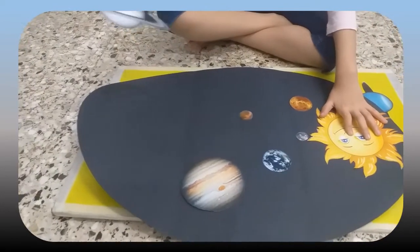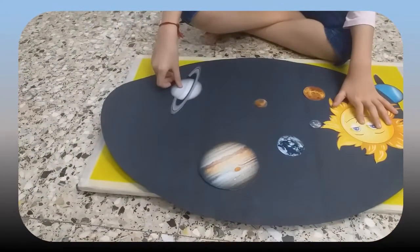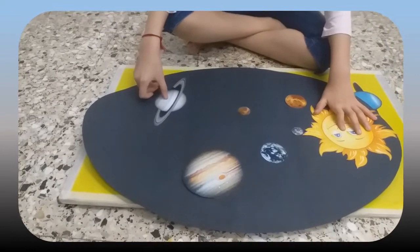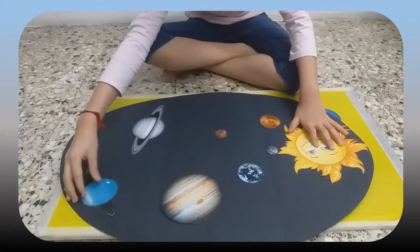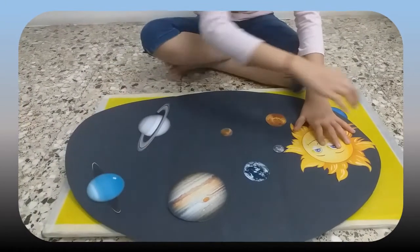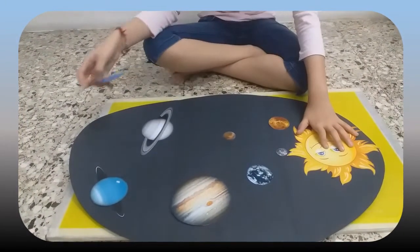Then comes Saturn. We will put it over here. And then is Uranus. This will come like this. And the last one is Neptune, the farthest planet from the sun.